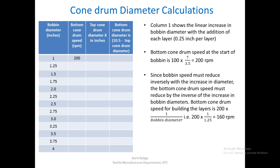Since bobbin speeds must reduce inversely with the increase in diameter, the bottom chondrom speed must reduce as the inverse of the increase in bobbin diameters. The bottom chondrom speed for building each layer is calculated as 200 × (1/bobbin diameter). For example, in the second row it would be 160 RPM. Calculating the entire column in this way, we get all the figures.